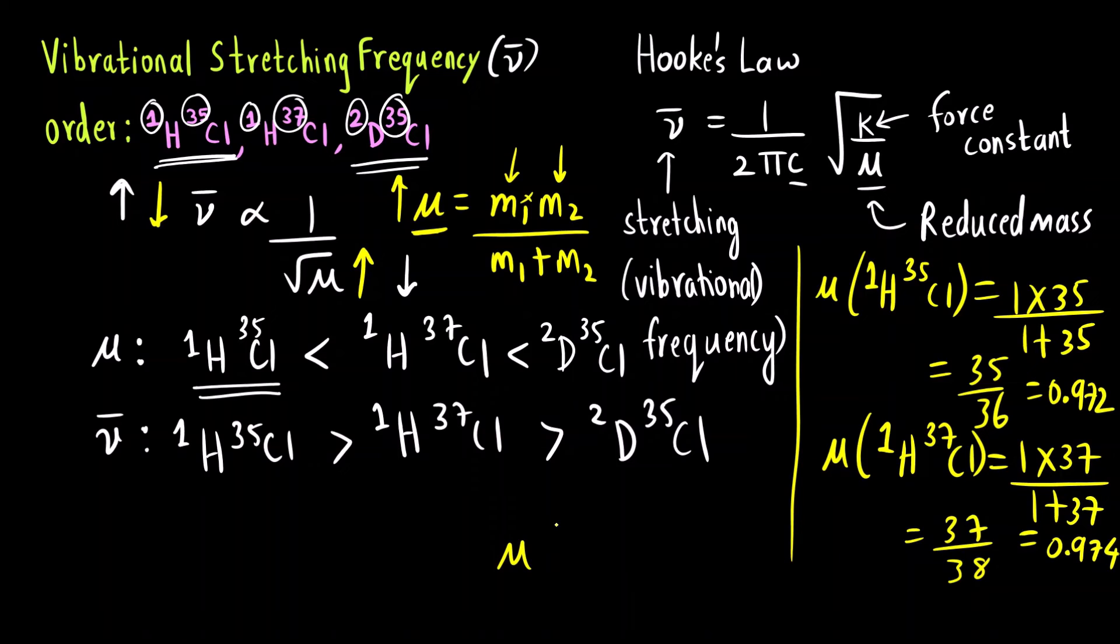And last one mu of 2D 35 Cl. This will be 35 into 2 divided by 35 plus 2, 37. This comes out to be 1.891. So you can see the order that we had written is correct. Without even calculating the exact values. 1H 35 Cl it is minimum 0.972. Then 1H 37 Cl is 0.974 and that of 2D 35 Cl is maximum and the order of stretching frequency will be reverse.